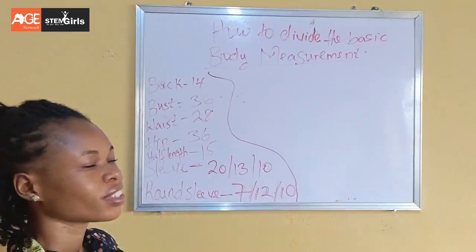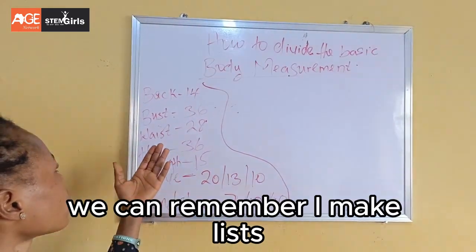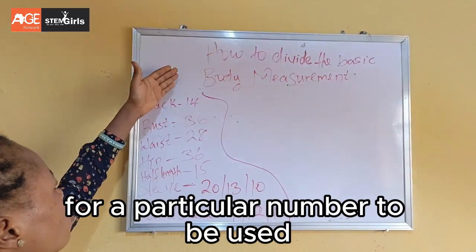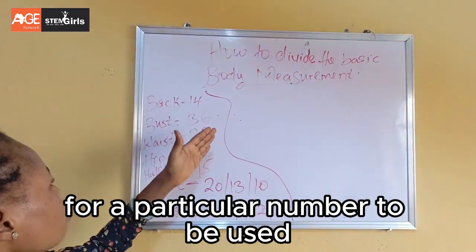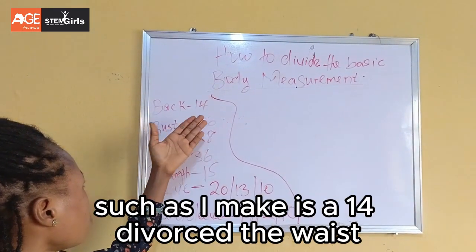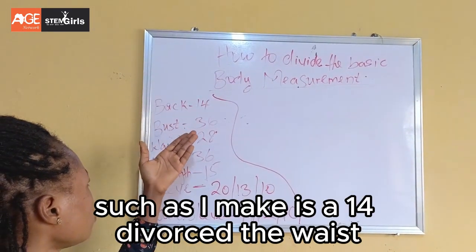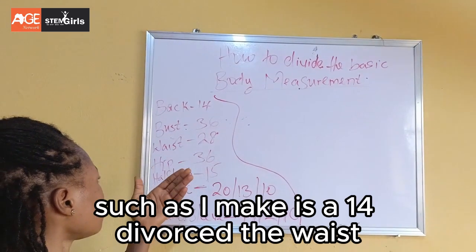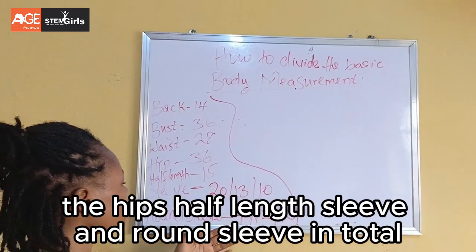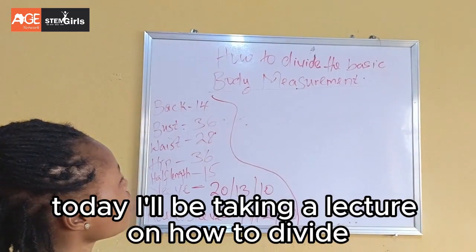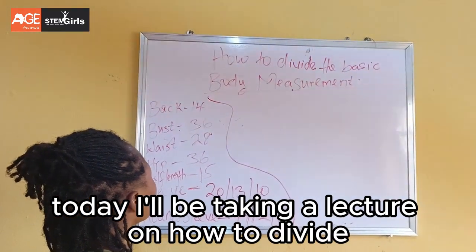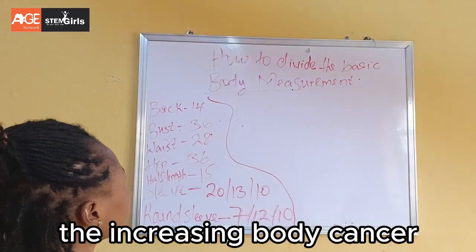In our last class, I made a list of particular numbers to be used for the basic elements — I made use of 14 for the bust, the waist, the hips, half length, sleeve, and the round sleeve in total. Today I will be taking a lecture on how to divide the basic body pattern.